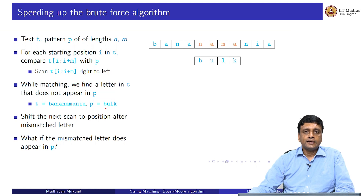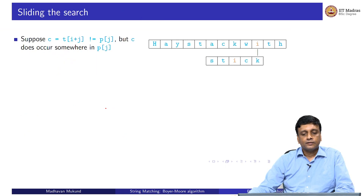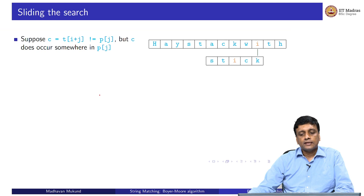But this is of course a special case. What do we do if we have a mismatch but that letter does appear in the pattern? Can we do anything intelligent in that case? Let us look at this example. We have the pattern 'stick' and the text 'haystack width'.